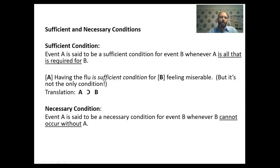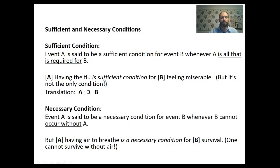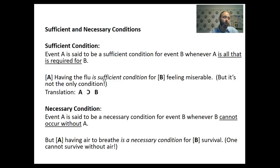For necessary conditions: Event A is a necessary condition for Event B whenever B cannot occur without A. For example, 'having air to breathe is a necessary condition for survival.' Since the consequent is the necessary condition, and A is a necessary condition here, this would look like B horseshoe A.